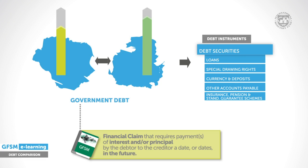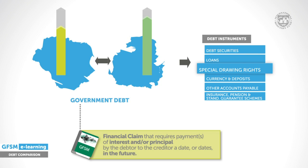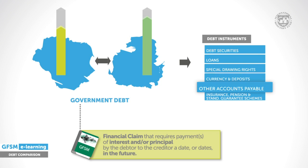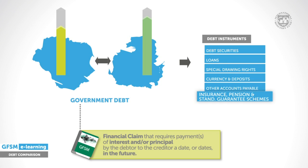The six categories are: debt securities, loans, special drawing rights, currency and deposits, other accounts payable, and insurance, pension and standardised guarantee schemes. If both countries report debt data with the same set of instruments, we are one step closer to achieving full comparability.